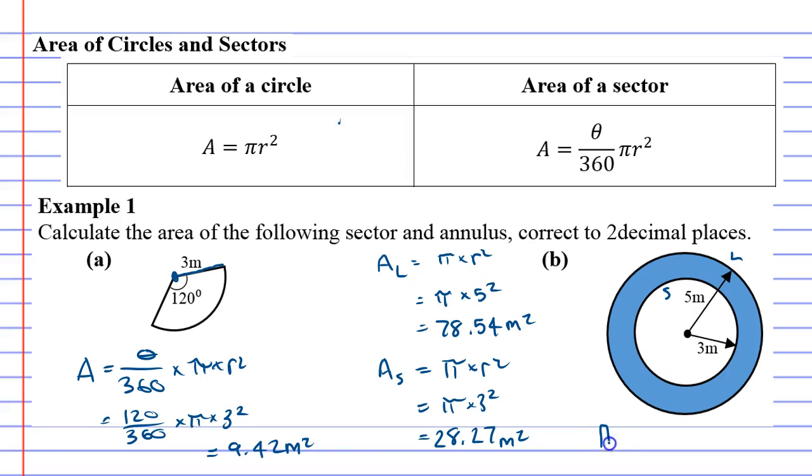If we're going to find the total area, which we'll call A_T, we need to take the area of the large circle, 78.54, and cut out or subtract the area of the smaller inner circle. So 78.54 minus 28.27 is 50.27 meters squared, and that's done.